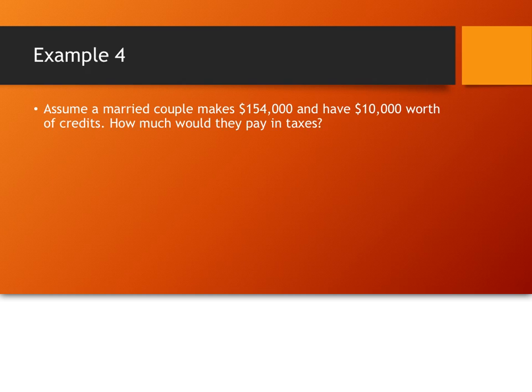Alright, so, hopefully you did that and we'll get going. So, if we have $154,000 worth of income, that puts the married couple in the over $148,850 category. Okay, alright, let's take $154,000, minus $148,850, and you get $5,150.